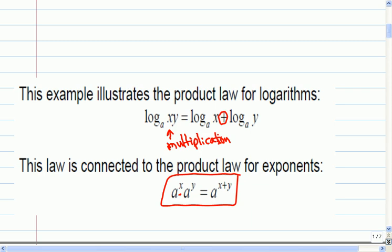So a product, if I have a product of the two values, that means the exponents are going to be added together. And remember, logs are always about exponents. So if the exponents were added in this example, that means the logs would be added here.